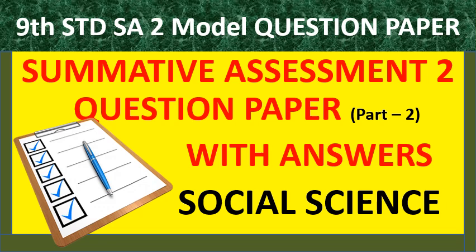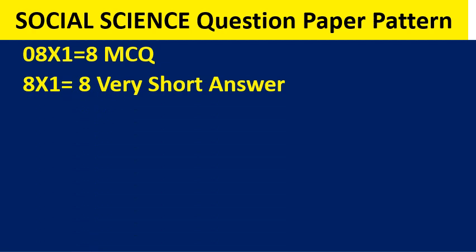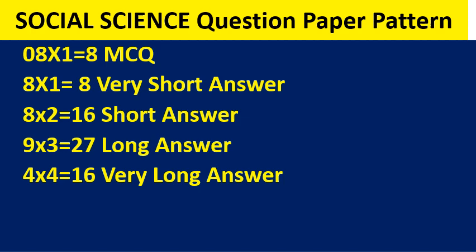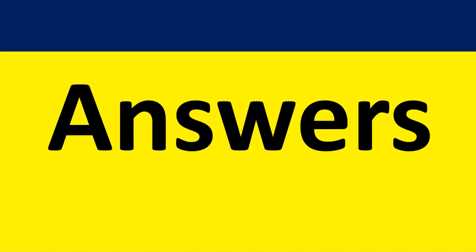Hello dear students, welcome to Essay 2, ninth standard social science part 2. Yesterday I presented a question paper with answers of the first two mains. Today I am presenting the answers of the remaining mains of Essay 2 question paper. The pattern was eight multiple choice, eight one-mark questions, eight short answers, nine long answer questions, four very long answers, and one mark for drawing the map of Karnataka — four places for location — totally 80 marks.